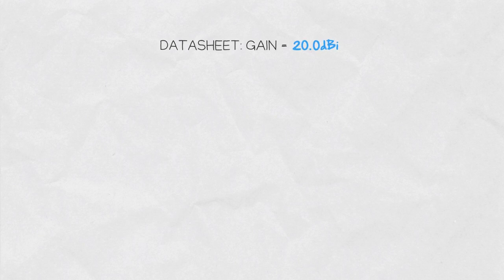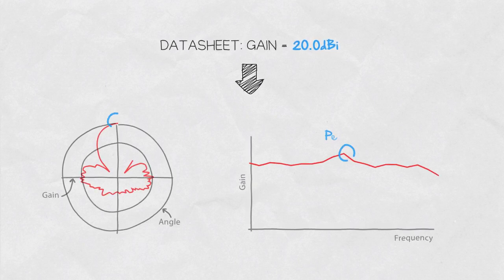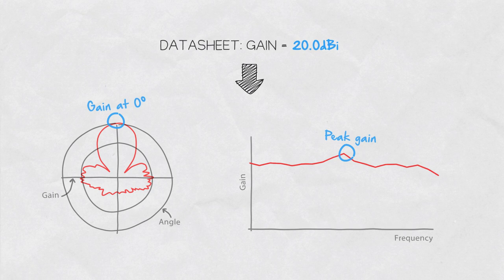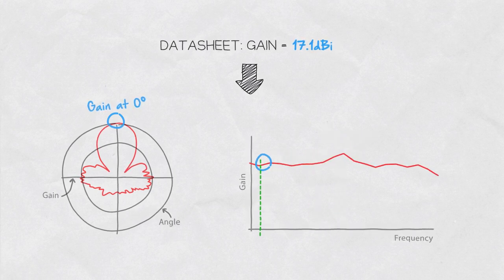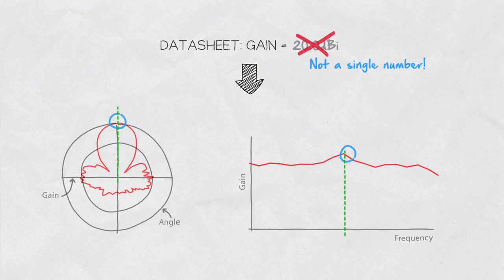The gain of an antenna in a datasheet is usually a single number, which is the peak gain at a particular frequency that is rarely disclosed. The truth is the gain of an antenna changes with frequency and with angle. Describing gain as a single figure is just not enough.